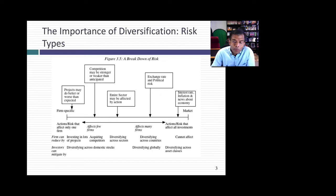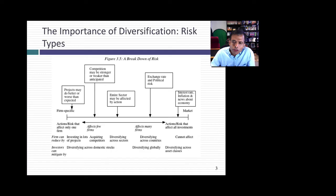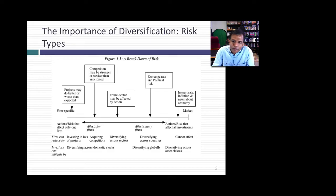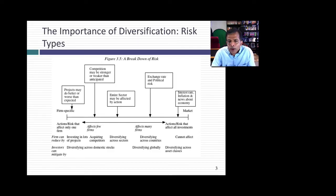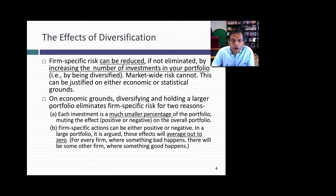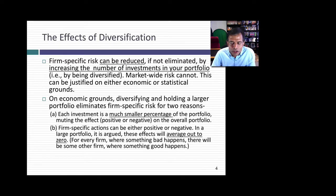This breakdown — risk affecting one or a few companies versus risk affecting most or all companies — is the starting point for why diversification pays off. When you spread your bets across investments, the risk affecting most or all companies, like macroeconomic risk, remains. You cannot eliminate that by holding a hundred stocks. But the risk affecting one or a few companies will average out. For every company where a project does better than expected, another might do worse — that's the law of large numbers working in your favor.